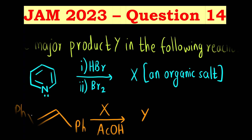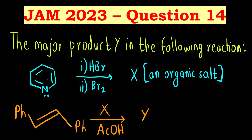Hello everyone, welcome to Chemizone Complete Chemistry. In today's video we are going to solve question 14 of the JAM 2023 paper. The first compound is pyridine — a benzene ring having one nitrogen atom as a heteroatom. Pyridine reacts with HBr and Br2 to form compound X, which is an organic salt. X then reacts with an alkene in the presence of acetic acid to form Y. We have to find out what Y is.